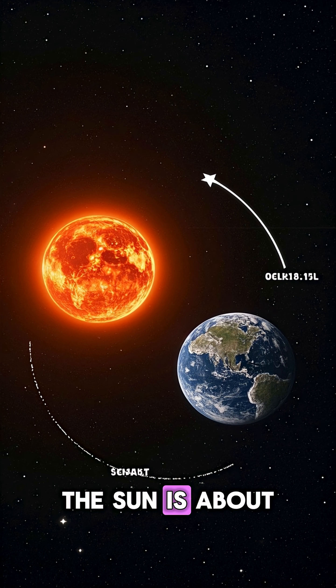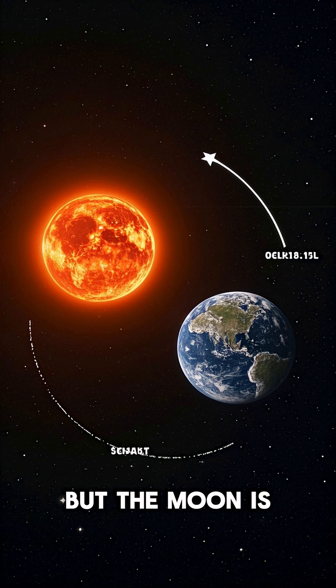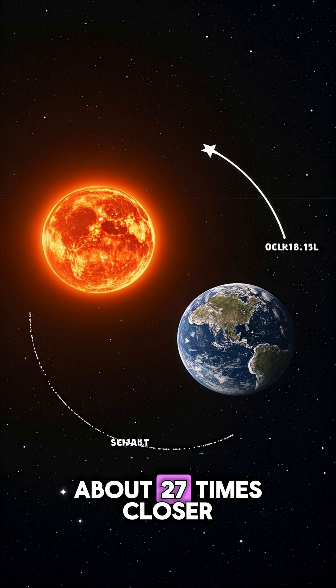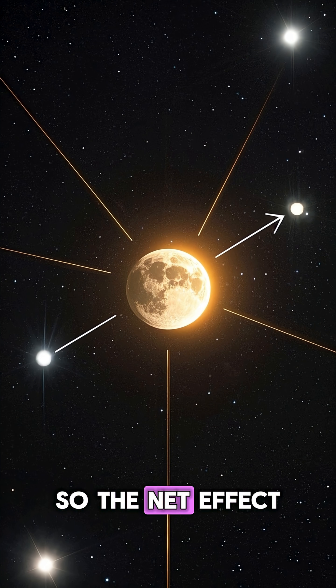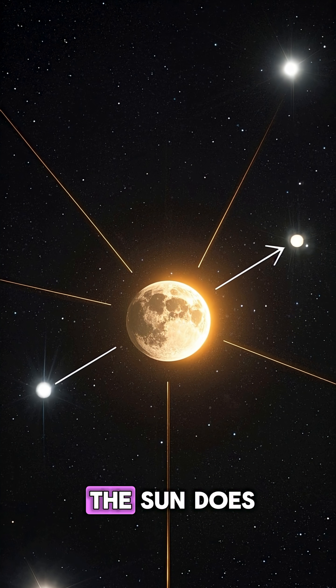The sun is about 330 times the mass of the moon, but the moon is about 27 times closer to Earth. So the net effect is that the moon has a bigger influence on our planet than the sun does.